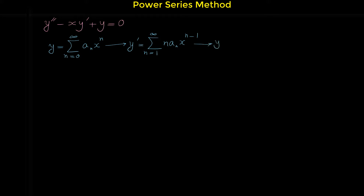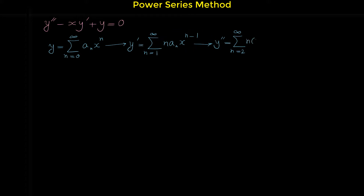The second derivative of y is sigma from n equals two to infinity, and the derivative of the general term is n times n minus one aₙ x to the n minus two.